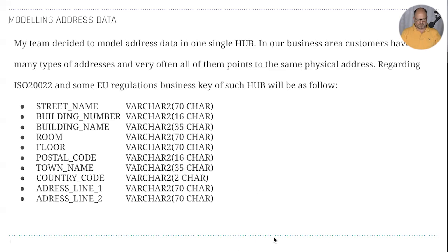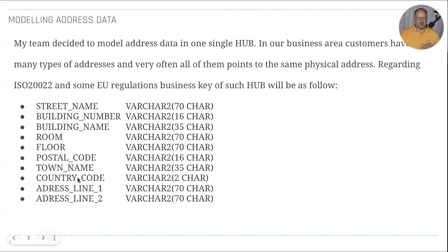This question is about modeling address data. My team decided to model address data in one single hub. In our business area, customers have many types of addresses and very often all of them point to the same physical address. Regarding ISO and EU regulations, the business key of such a hub will be composed of many attributes — like address name, postal code, town name — which you would typically associate with descriptive data. But they decided to use these attributes as the business key in the hub.